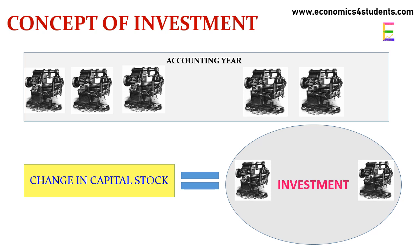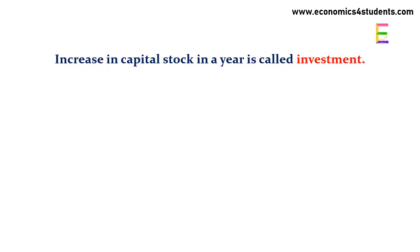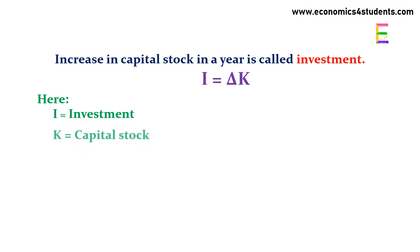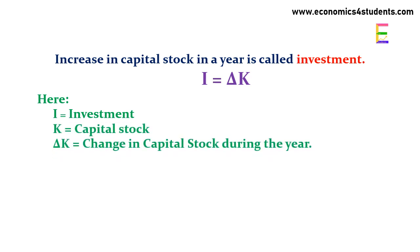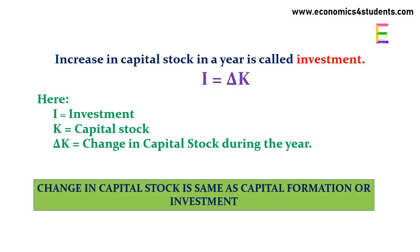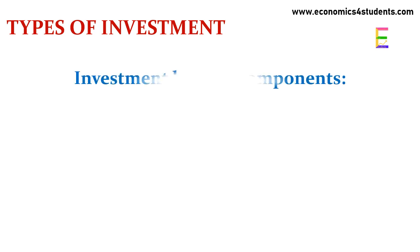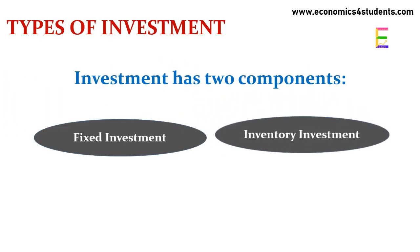This change in capital stock is called investment. In an economy, producers always want to increase their capital stock so that their capacity to produce increases over time. This increase in capital stock in a year is called investment. Thus, I equals delta K, where I is investment, K is capital stock, and delta K is change in capital stock during the year. Change in capital stock is same as capital formation, which is same as investment.